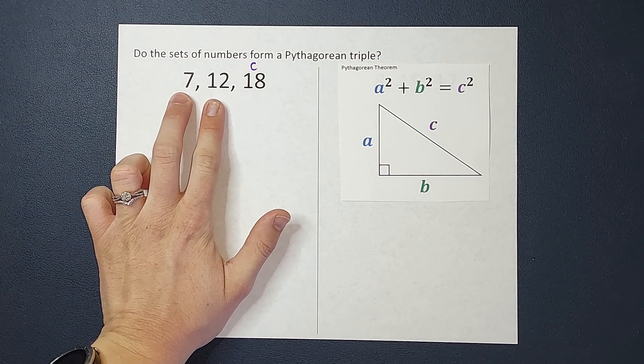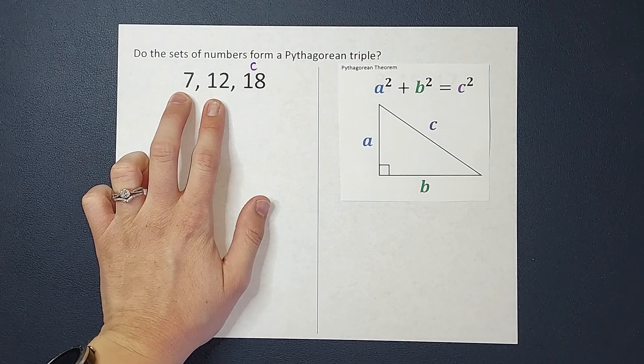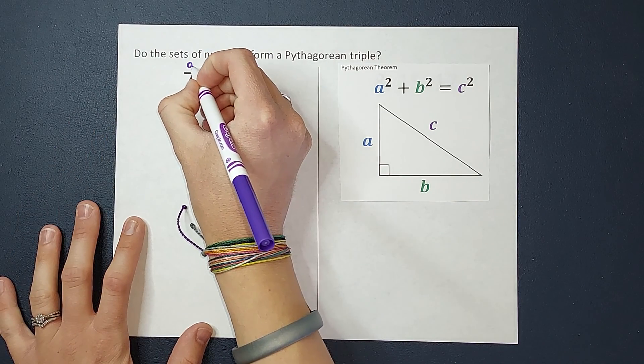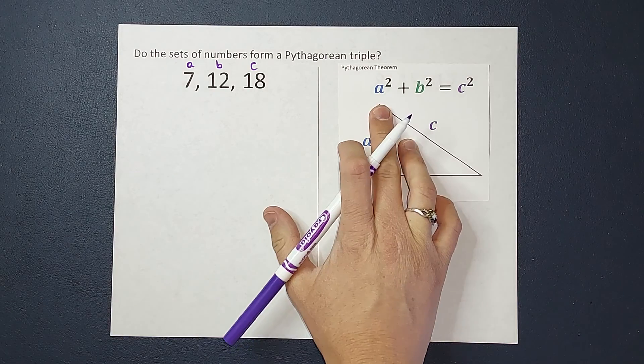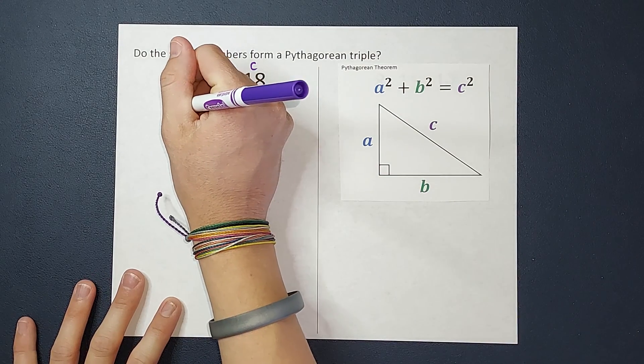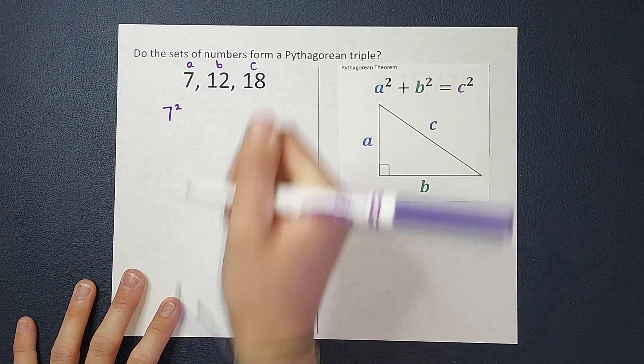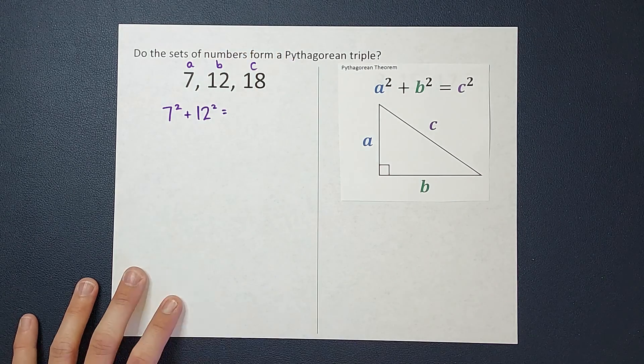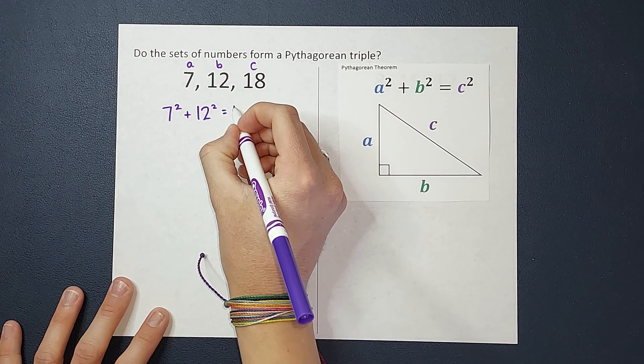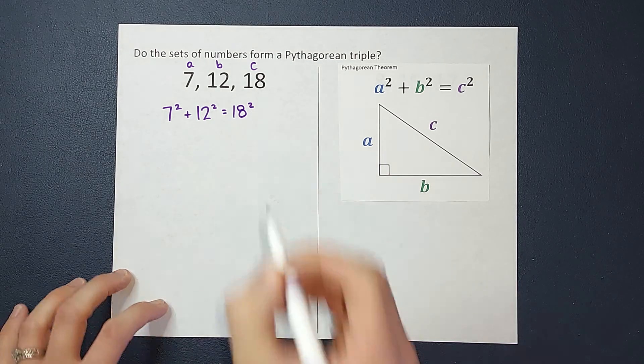Now these two numbers are A and B. It doesn't matter which is A and which is B. I'm just going to go A, B. Let's go ahead and plug this in. So I've got A squared, which is 7. So 7 squared plus B squared, which will be 12 squared, equals C squared, which is 18 squared.